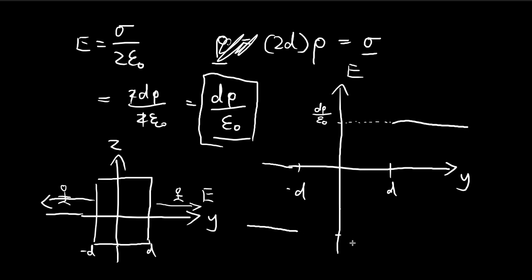And the same for this, only this time it's negative d rho over epsilon. Because once you're at this side, the electric field points left.